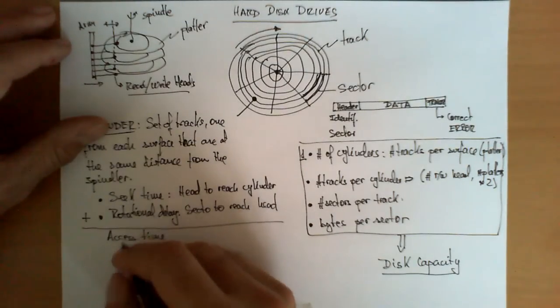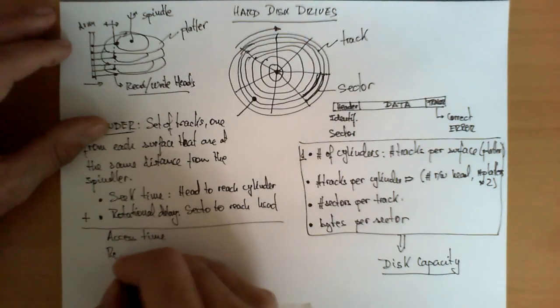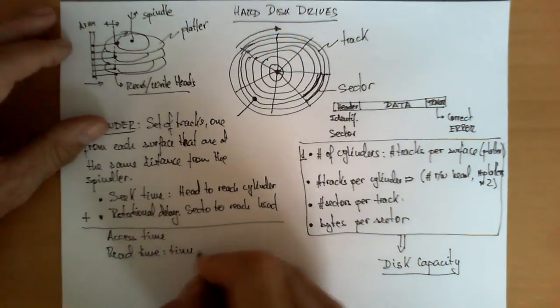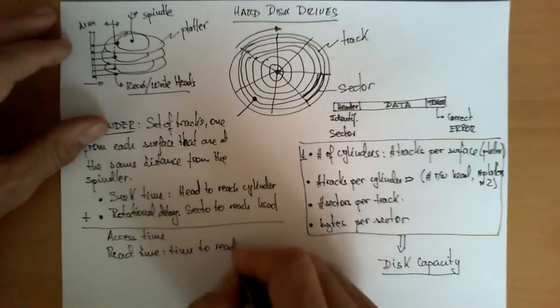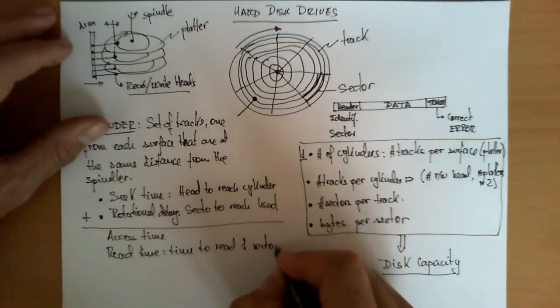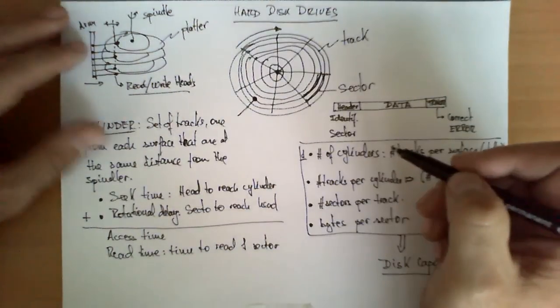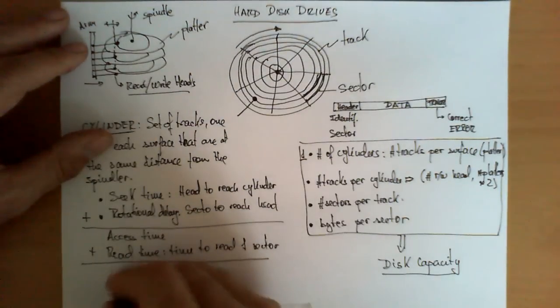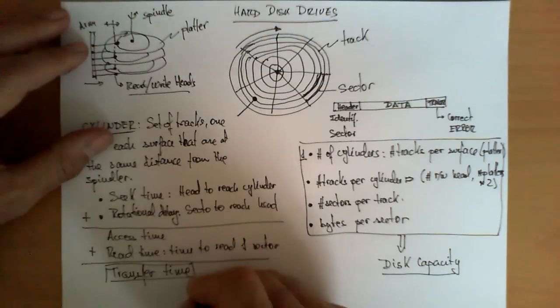That time is what is called read time. In other words, is the time to read one sector, once it is placed exactly underneath the head. If we add these two magnitudes, then as a result, we have another very important dimension, which is the transfer time.